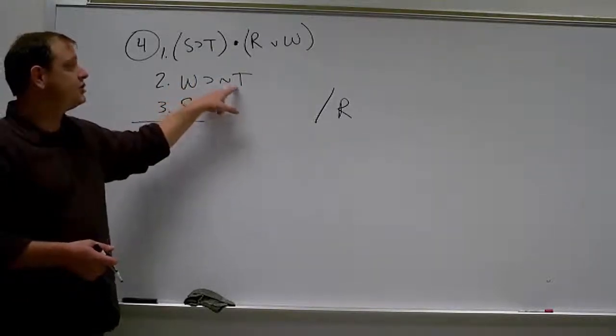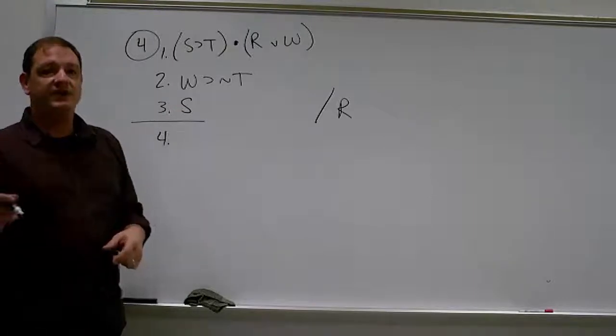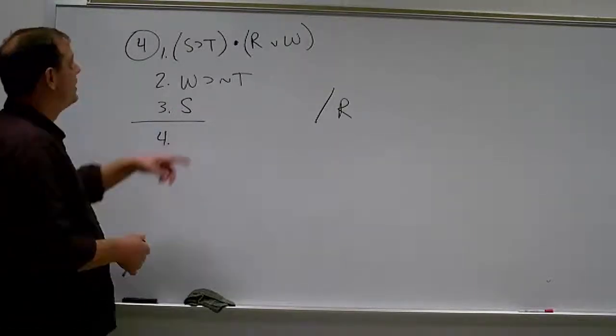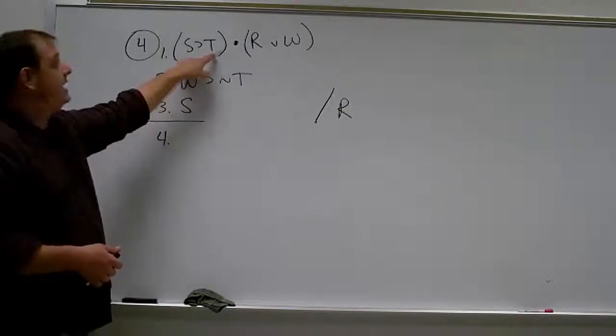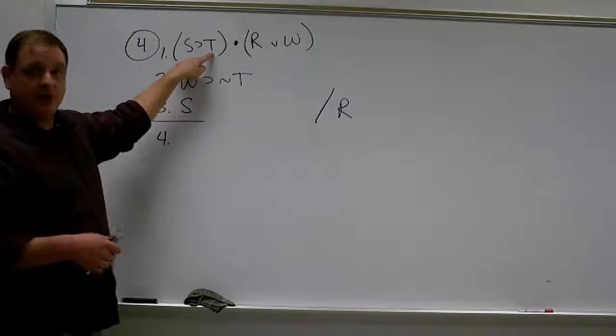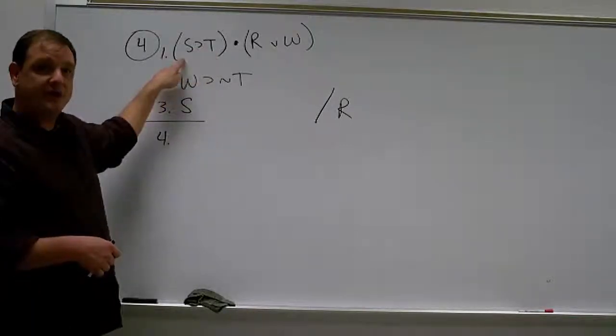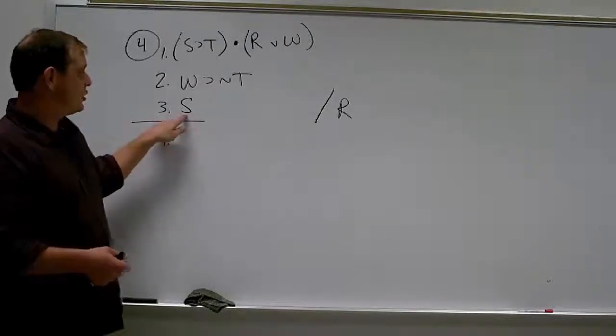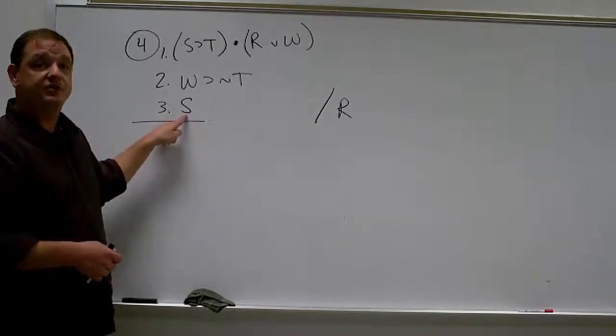Right? So we need to show that not T is false. Or, if you would rather, that T is true. Well, here's another T. And it's part of an and statement, so we can simplify it out. So in order to prove that T is true, we would have to know that S is true. And that would be modus ponens, right? And so we do, in line three, know that S is true.